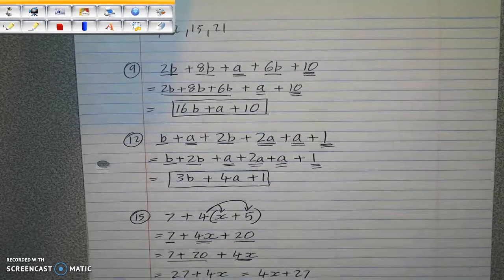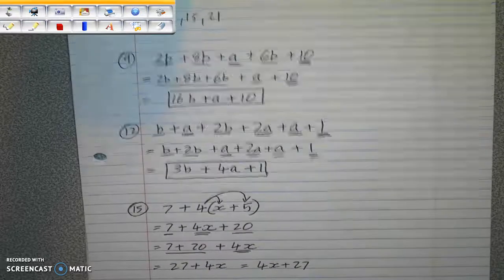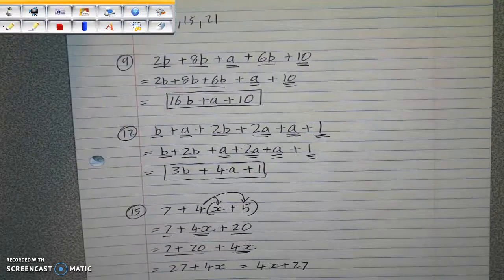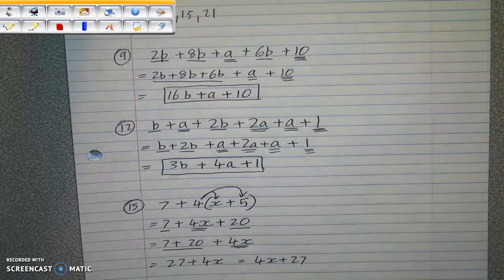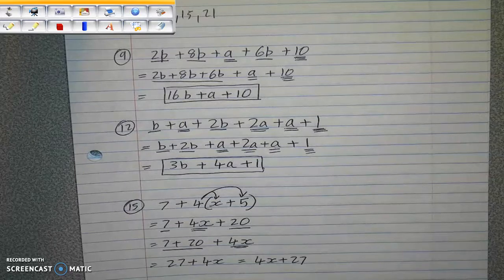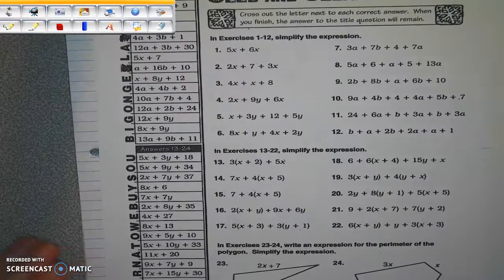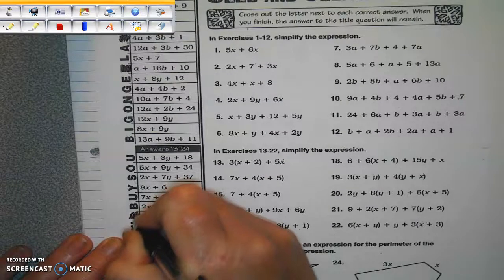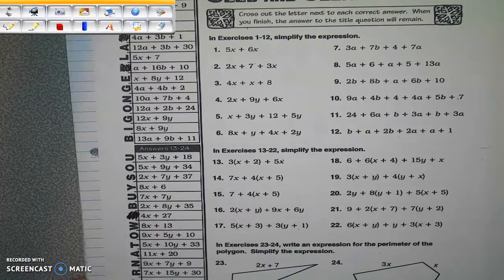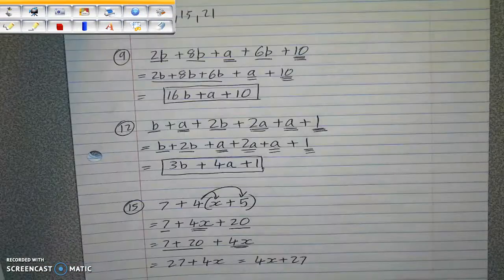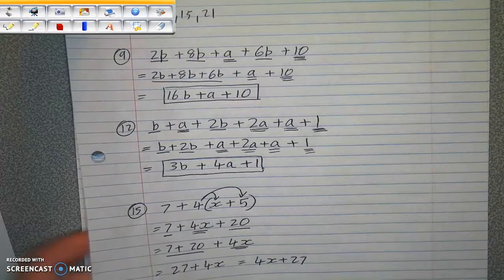I don't necessarily expect you to write every single line out the way I'm doing it in the puzzle when you're solving this. But the more work that you show, the more accurate you are likely to be. So let's look for this answer 4x plus 27. It's right here, because it's in the second half of the puzzle. So that gets crossed out, 4x plus 27.